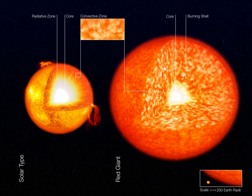A giant star is a star with substantially larger radius and luminosity than a main sequence star of the same surface temperature. They lie above the main sequence on the Hertzsprung-Russell diagram and correspond to luminosity classes 2 and 3. The terms giant and dwarf were coined for stars of quite different luminosity despite similar temperature or spectral type by Ejnar Hertzsprung about 1905. Giant stars have radii up to a few hundred times the Sun.